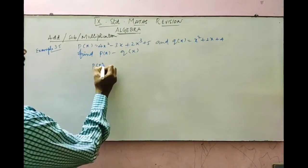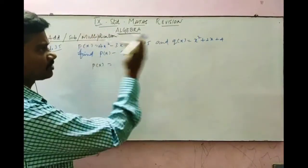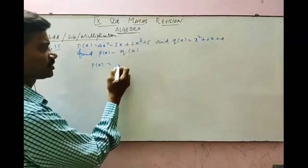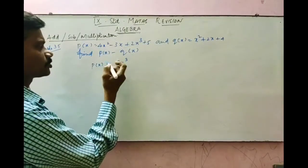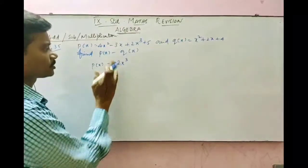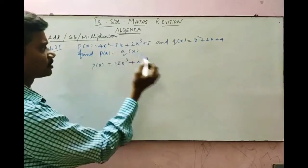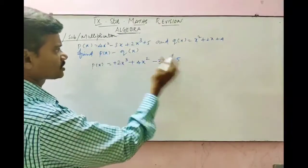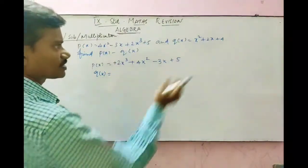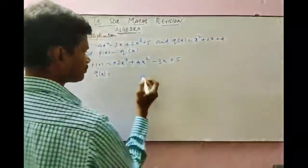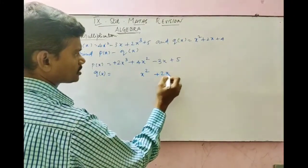First, arrange the polynomial in standard form — from descending powers, highest power to lowest. The highest power term is 2x cubed, then plus 4x squared, then minus 3x, and the last term is plus 5. Next, write Q of x: it has an x squared term, x term, and constant term — x squared plus 2x plus 4, aligned below the corresponding terms of P of x.